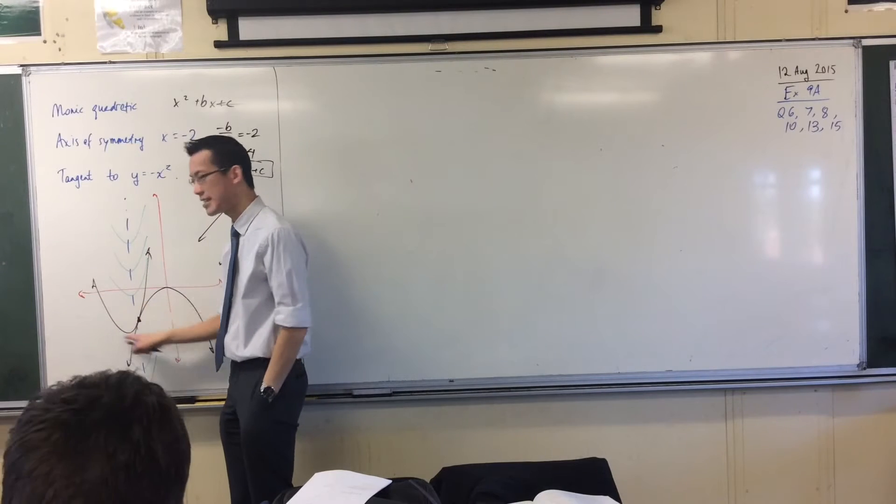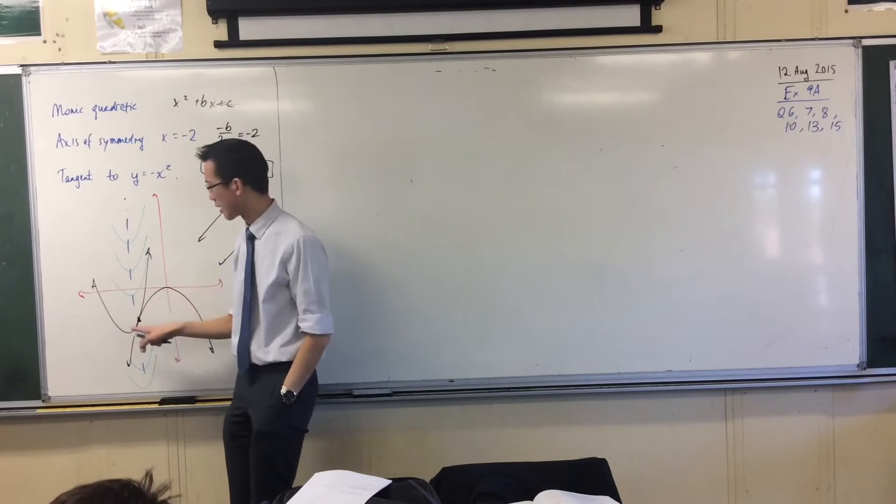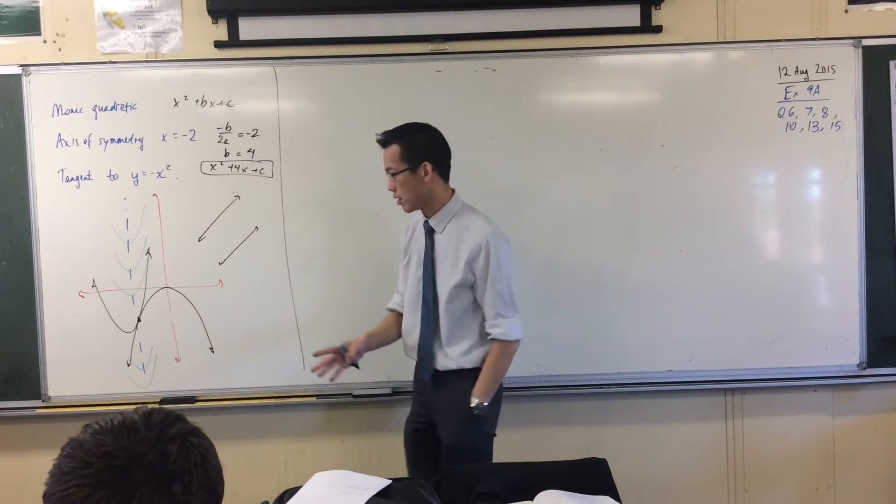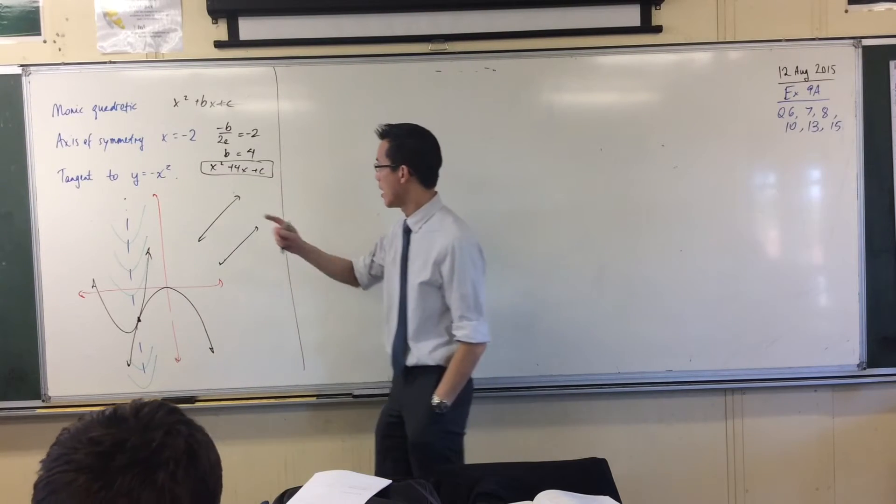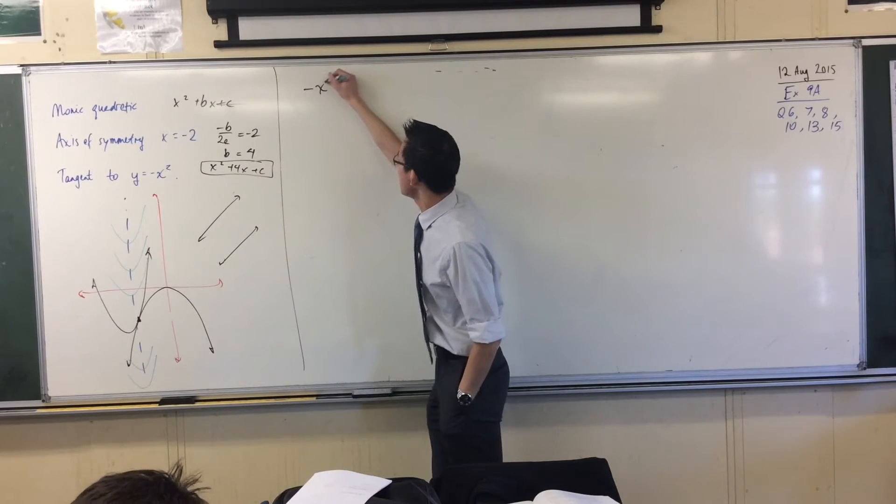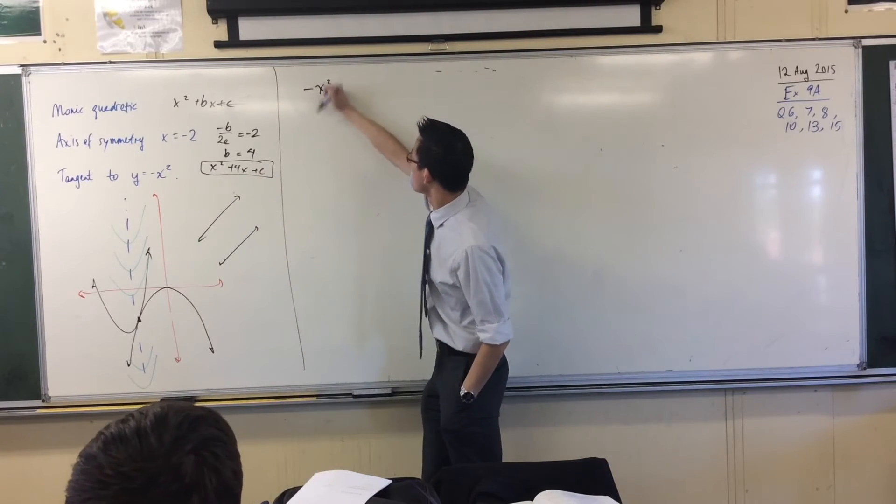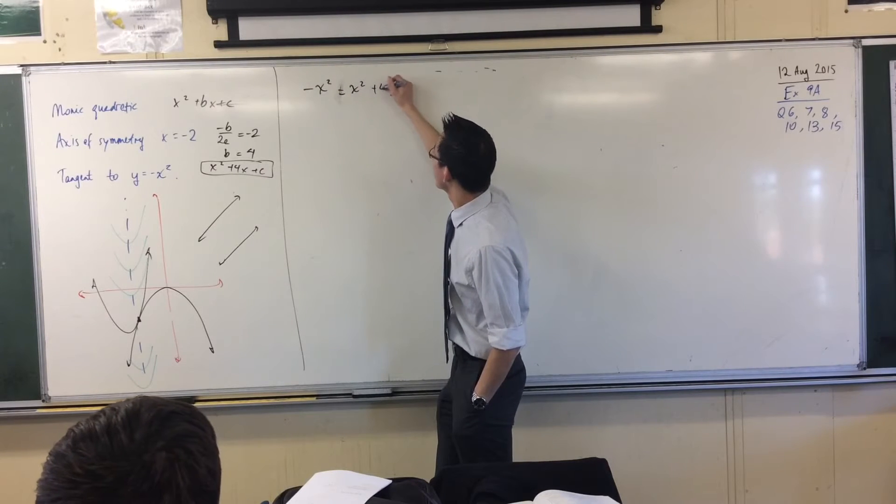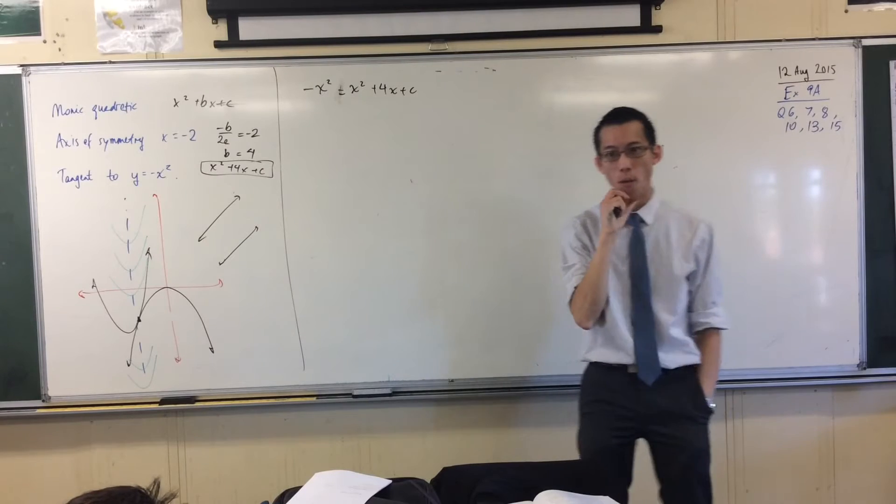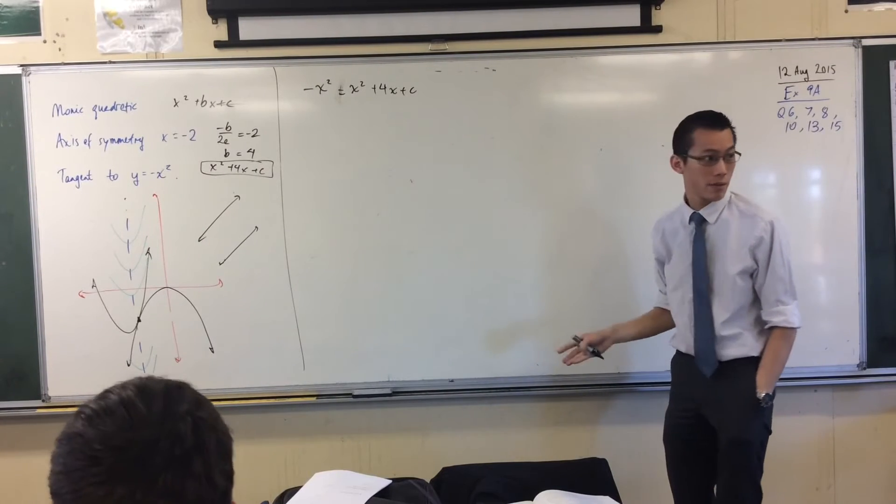Now, noticing that they intersect neatly together. If I were to find that point of intersection, the way I would do it is just by solving simultaneously. Here's one equation, and here's the other one. So this is that point, this will give me the x-coordinate for where they intersect. Do you agree with that?